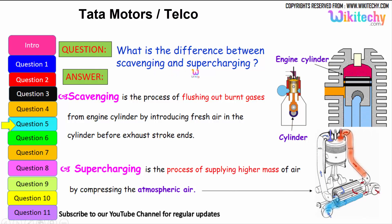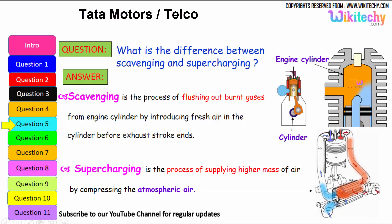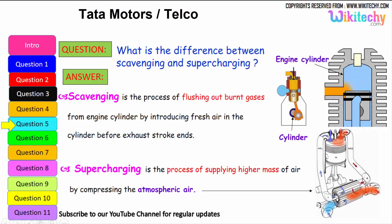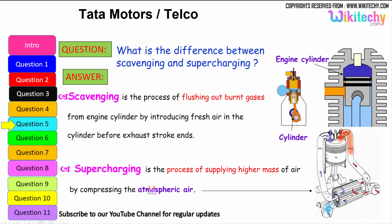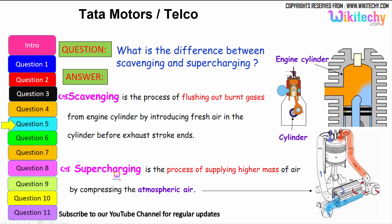What is the difference between scavenging and supercharging? Scavenging is the process of flushing out the burnt gases from the engine cylinder by introducing fresh air into the cylinder before the exhaust stroke ends. Supercharging, on the other hand, is the process of supplying higher masses of air by compressing air above atmospheric pressure — that is referred to as supercharging.